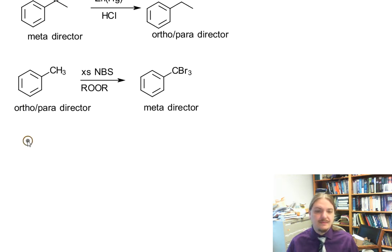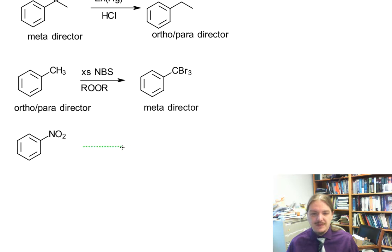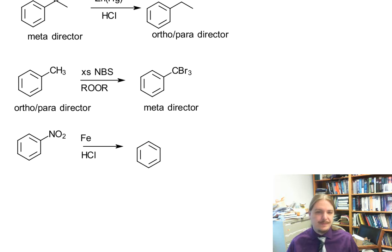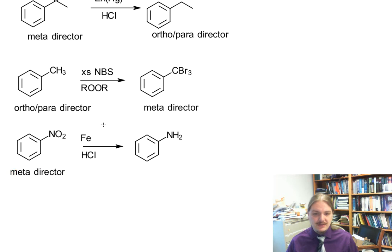Finally, the nitro group can be reduced using a variety of reducing agents — such as iron, zinc, or tin and hydrochloric acid, or catalytic hydrogenation — to give the amine. So here we're taking a meta-director and converting it into an ortho-para director.